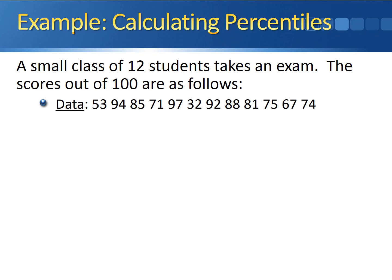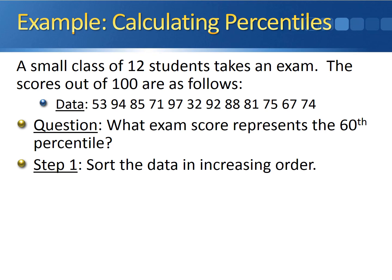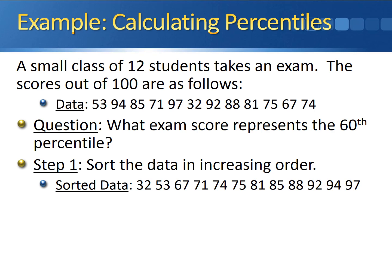Here's an example of how we calculate percentiles. Let's say we have a small class of 12 students that take an exam, and we have all of their scores out of 100. What we want to know is what exam score represents the 60th percentile — the score where 60% of the people did worse and 40% of the people did better. The first step is to sort the data in increasing order, smallest observation first and largest observation last. Taking our 12 observations and sorting them, we have 32 as the smallest score, followed by 53, 67, working our way up until we get to 92, 94, and our highest score of 97.